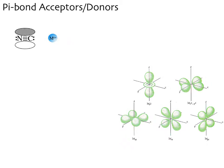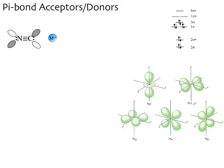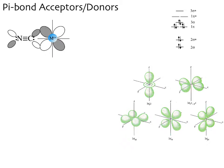In addition to this sigma donating ability of the cyanide, it also has pi bonding orbitals — filled and empty pi star orbitals. If we look back to our MO diagram for cyanide, we see that it has filled pi orbitals and an empty set of pi star orbitals. I've shown one of those pi star orbitals here. That pi star orbital has the right symmetry to perfectly overlap with, in this case, a dxz orbital on the metal.